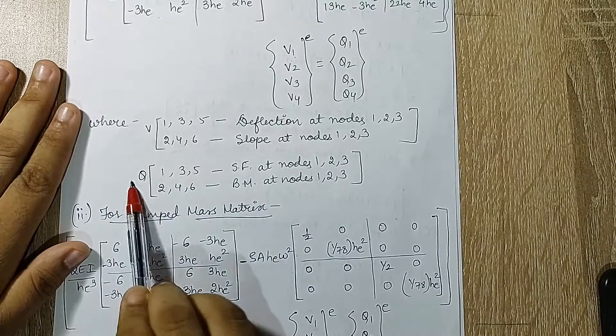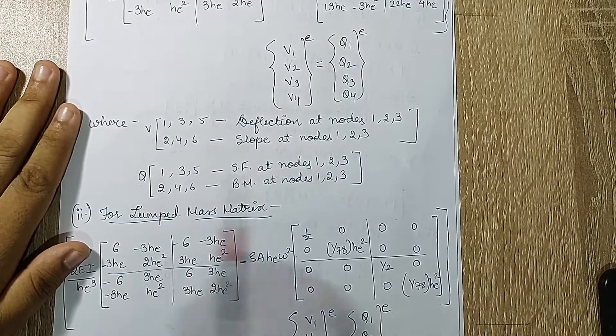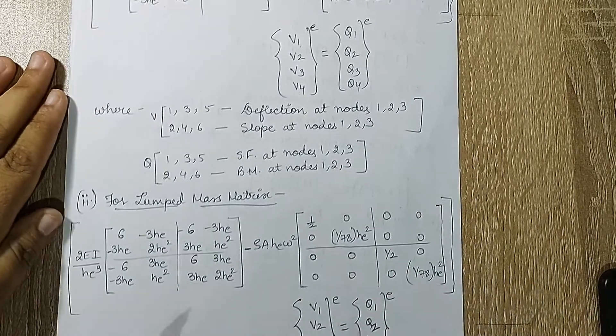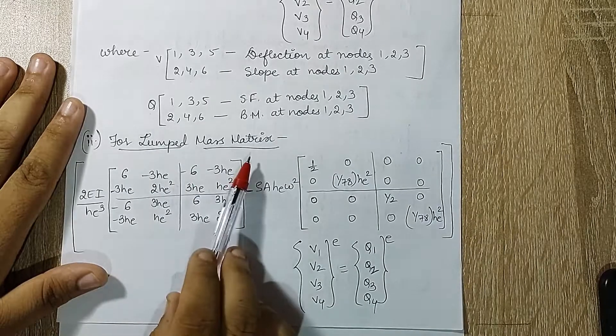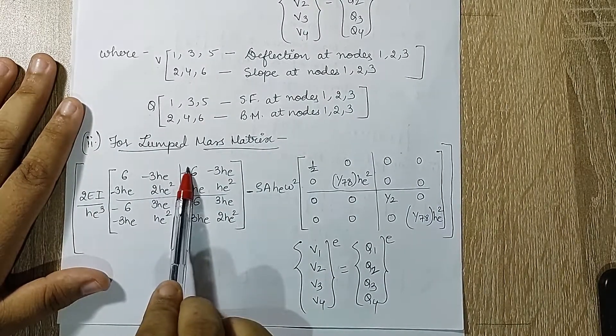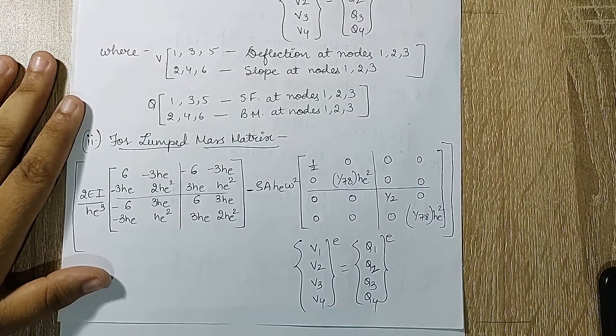When I talk about q1, q3, q5, the odd numbers for q will indicate shear force, and 2, 4, 6 will indicate bending moment. They are for node 1, 2, 3 respectively. Then we'll talk about lumped mass matrix.